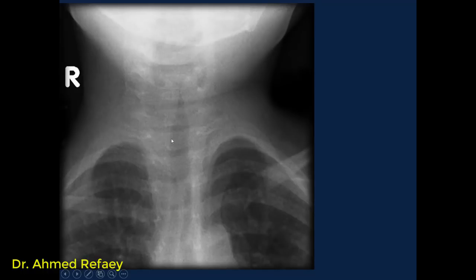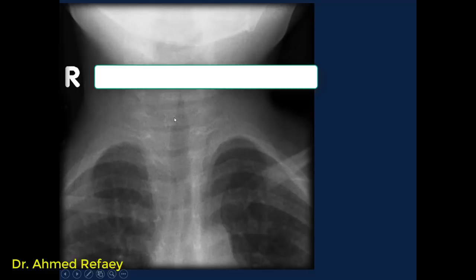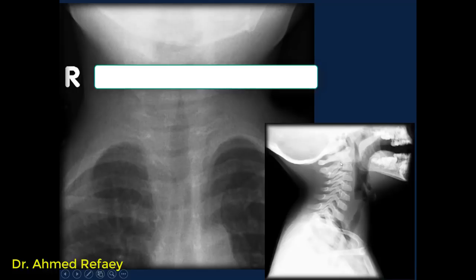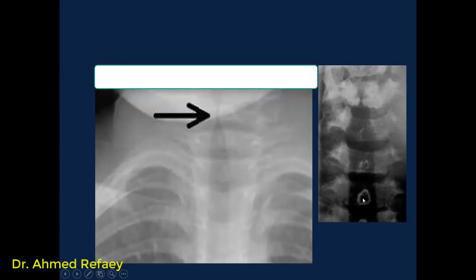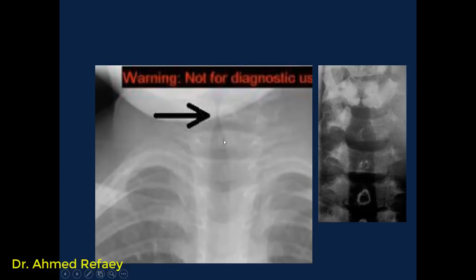This is a case of croup. We have complete loss of the subglottic shoulder, giving the appearance of an inverted V shape or steeple sign. On the lateral neck X-ray of the same patient, we can appreciate normal epiglottis and normal aryepiglottic fold. Another example of croup showing loss of subglottic shouldering giving the inverted V or steeple sign, compared with the normal subglottic shouldering appearance.